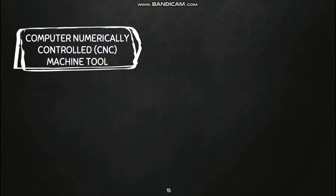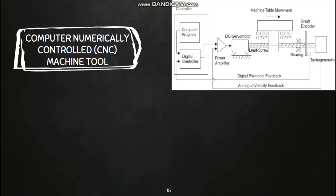If we talk about a computer numerically controlled (CNC) machine tool, a computer program gives input to the digital controller, which runs a DC servo motor. This servo motor drives the lead screw as well as the machine tool table. There are two feedback devices: first, a shaft encoder which uses a photodiode to take positional feedback and give it back to the digital controller; second, a tachogenerator which measures velocity, providing analog velocity feedback to the DC servo motor, which is adjusted as per demand.